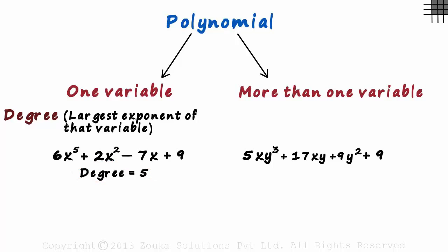Let's look at a second example in this category. 21x plus 6x cubed plus 7 plus x squared. In the first term, the degree of x is 1. In the second term, the degree of x is 3.